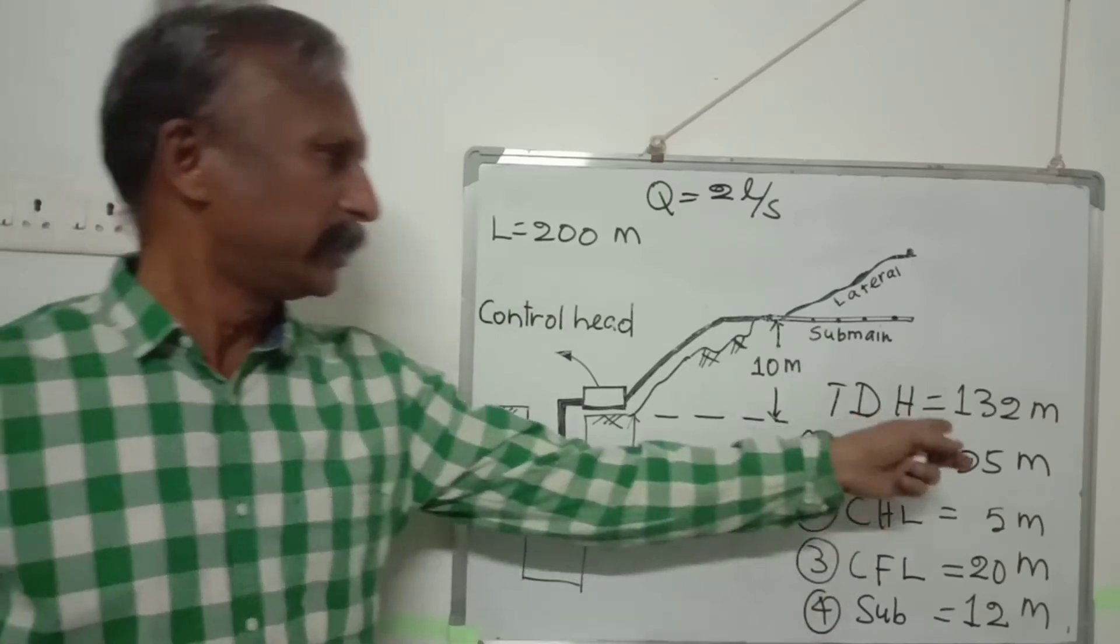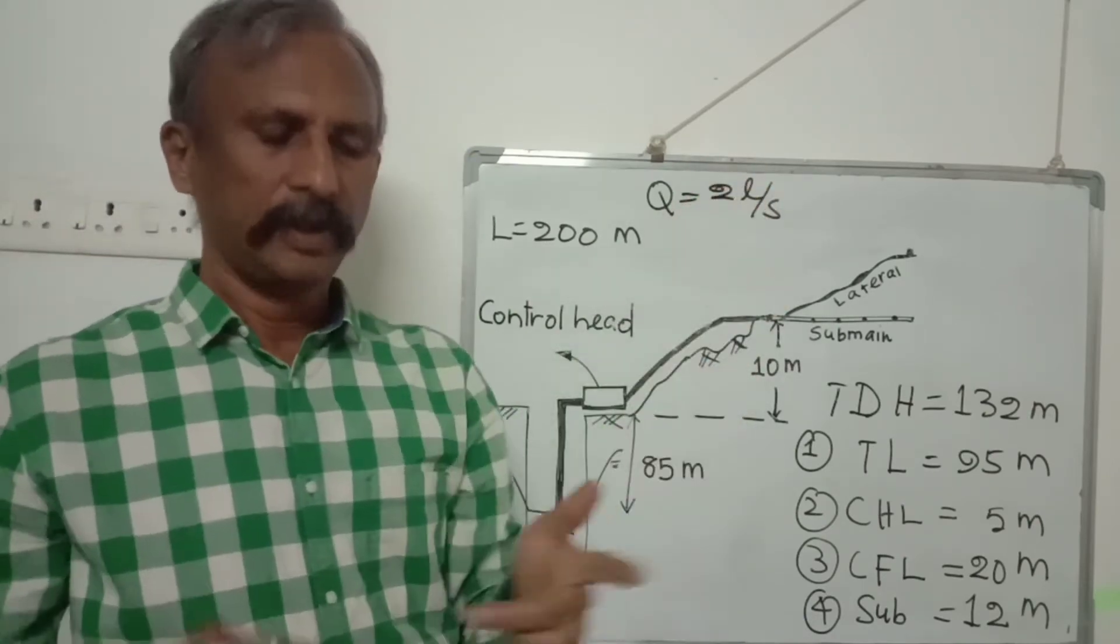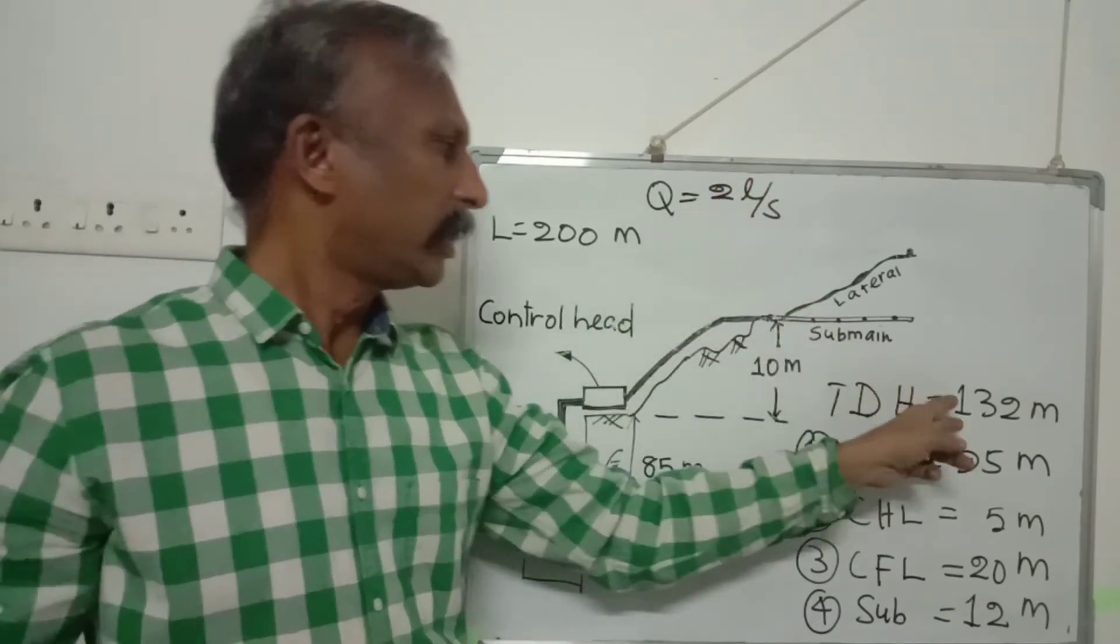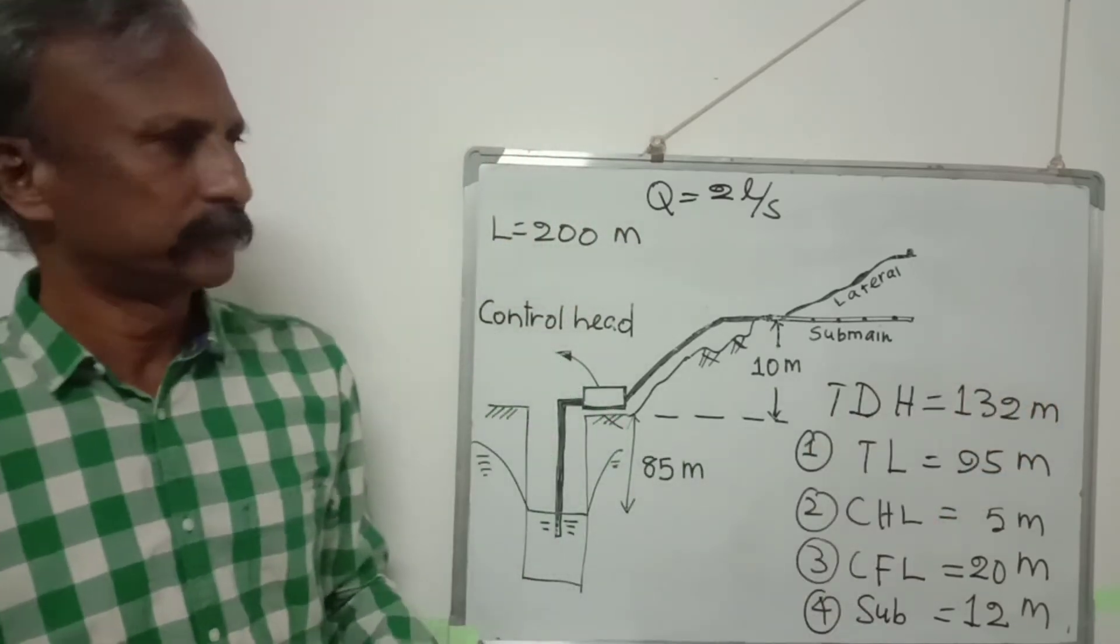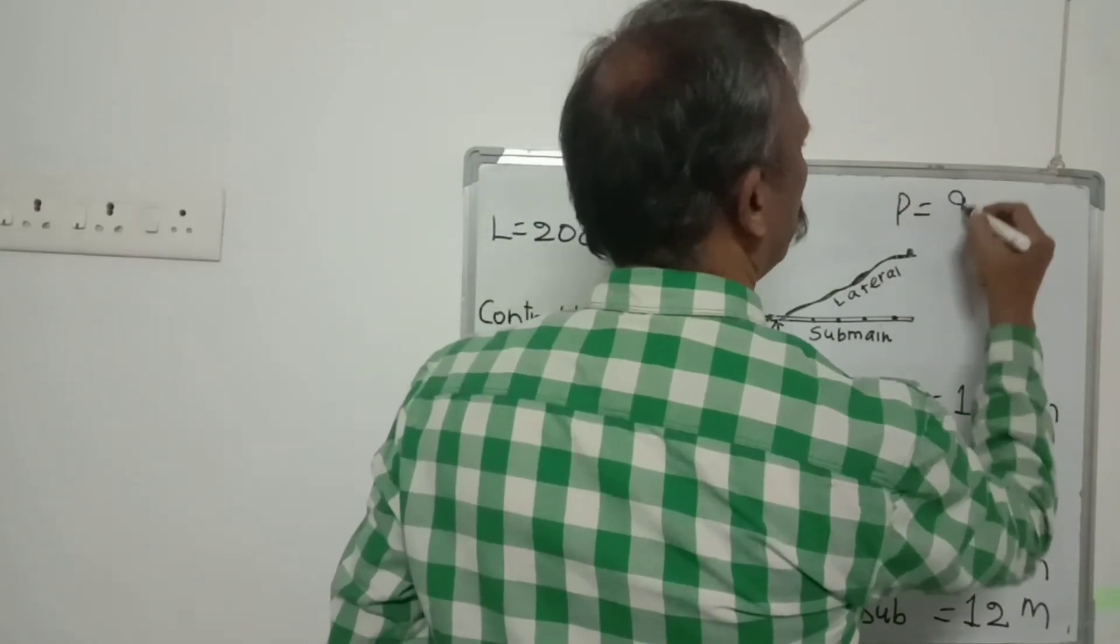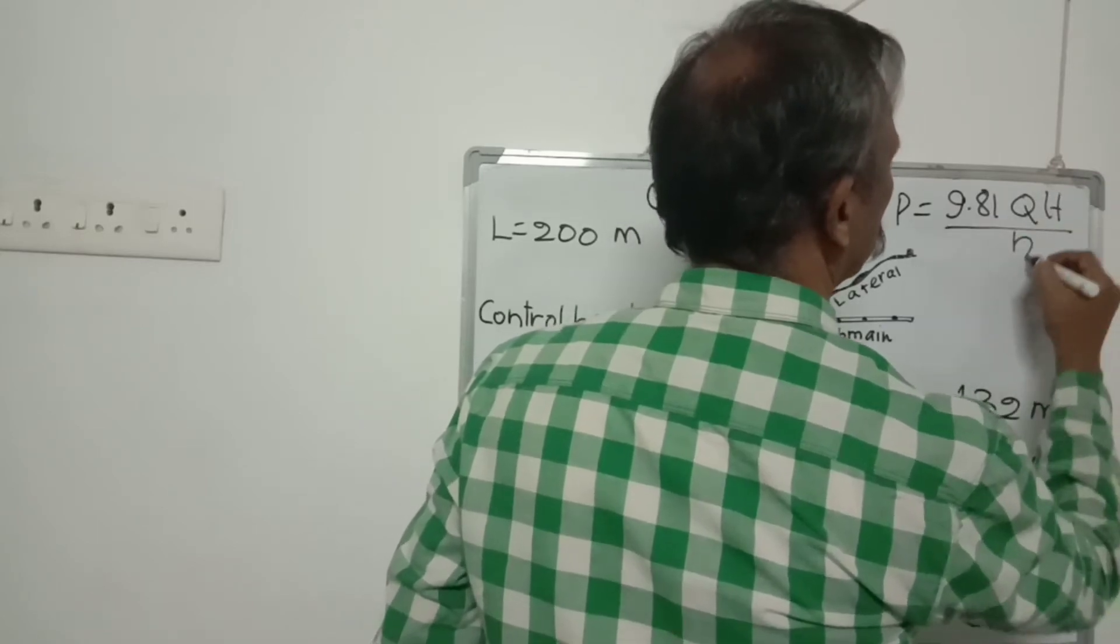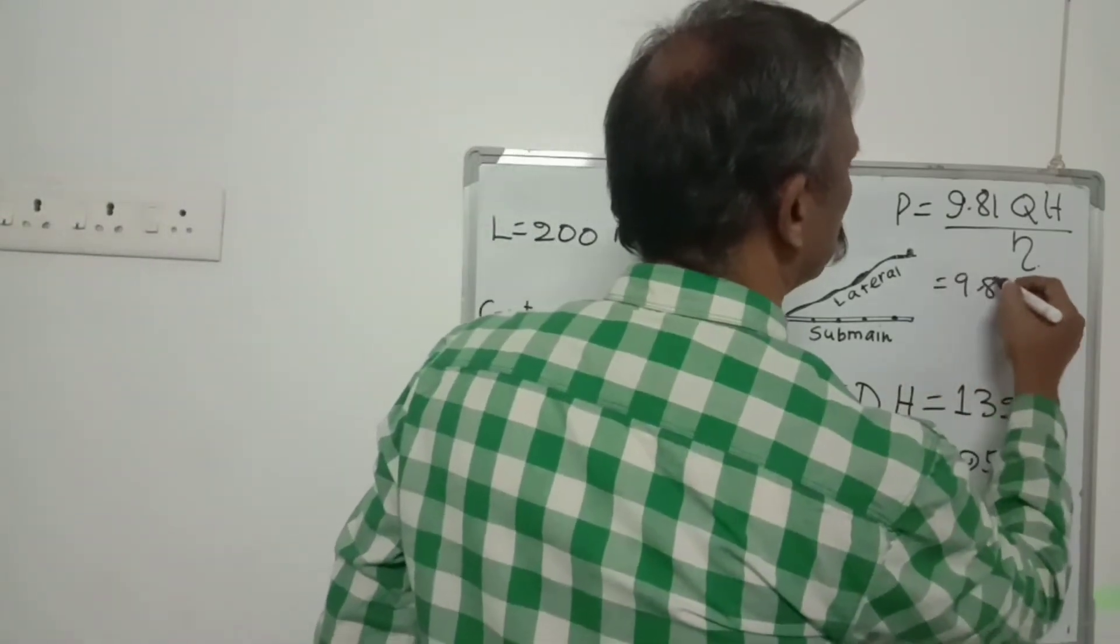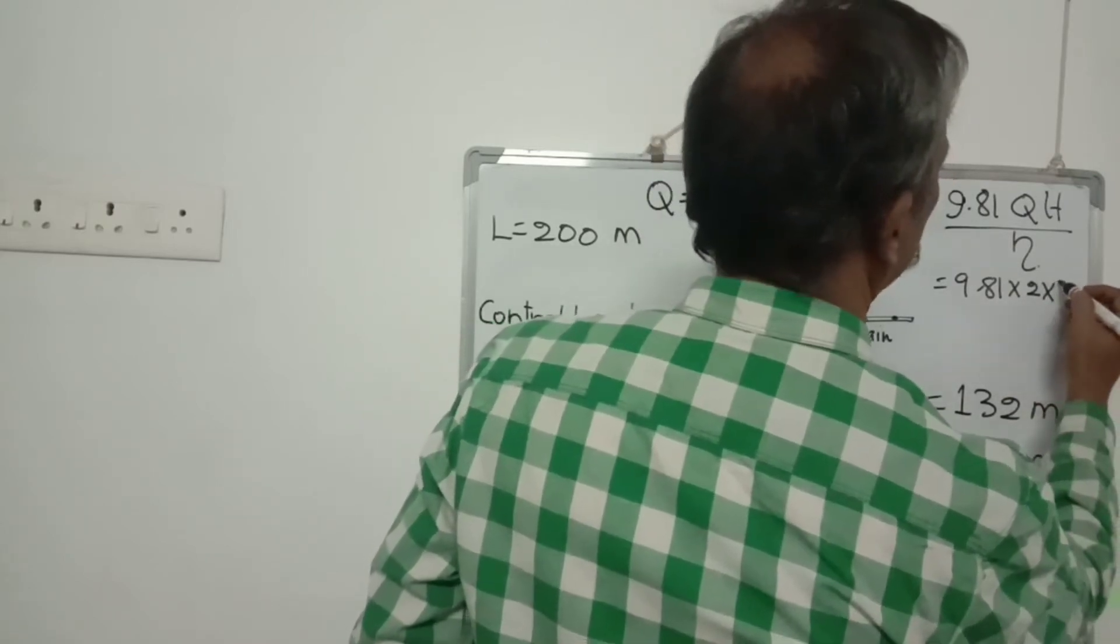Next, using this 132 meters pressure head and 2 liters per second, we need to purchase a pump which can deliver 2 liters per second and can also impart 132 meters of pressure head. For that, the formula is 9.81 × Q × H divided by efficiency. So 9.81 into 2 liters per second and H is 132 meters.